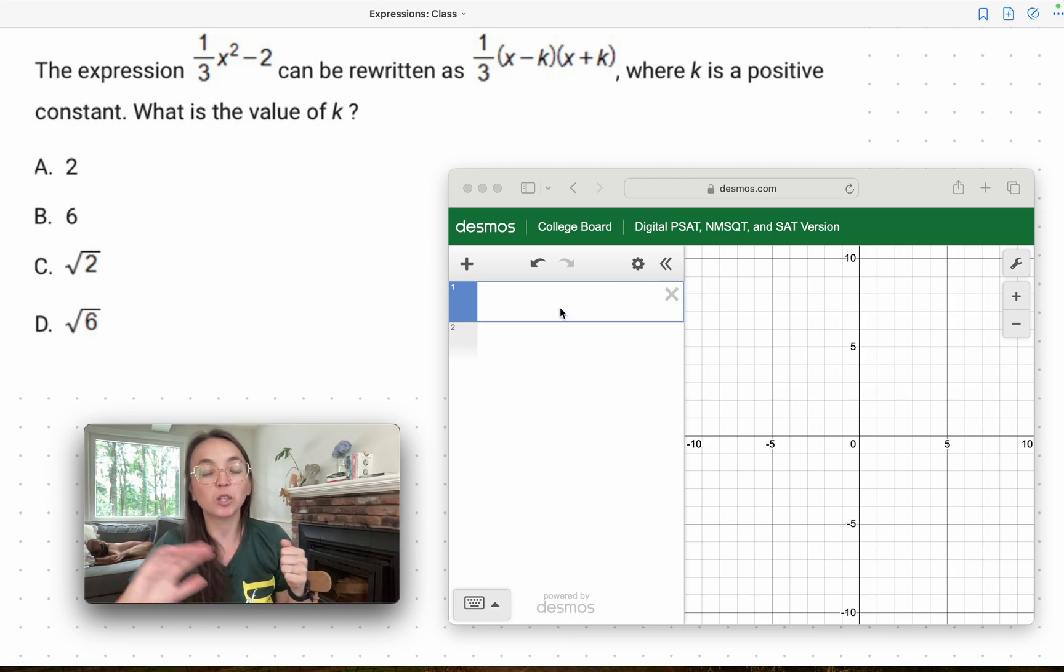So what we're going to do is we're just going to input this expression. The question reads: the expression 1/3 x² - 2 can be rewritten as 1/3(x - k)(x + k), where k is a positive constant. What is the value of k?